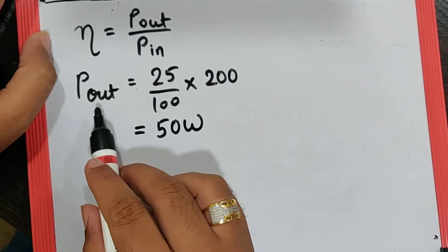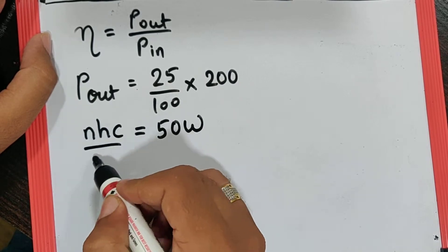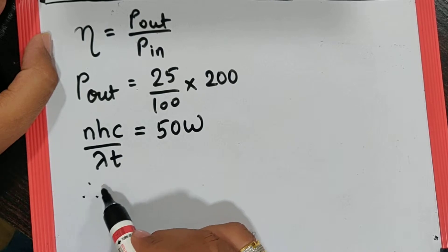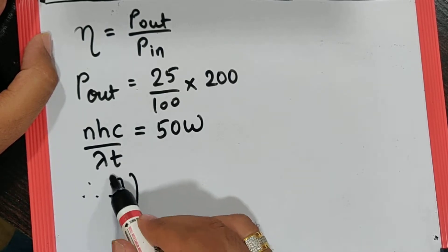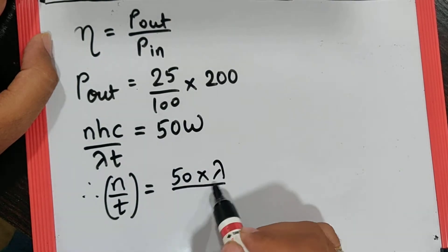The formula for power in case of light is nhc/λt. Since we are supposed to find n/t, I can say n/t is going to be 50 times wavelength divided by hc.